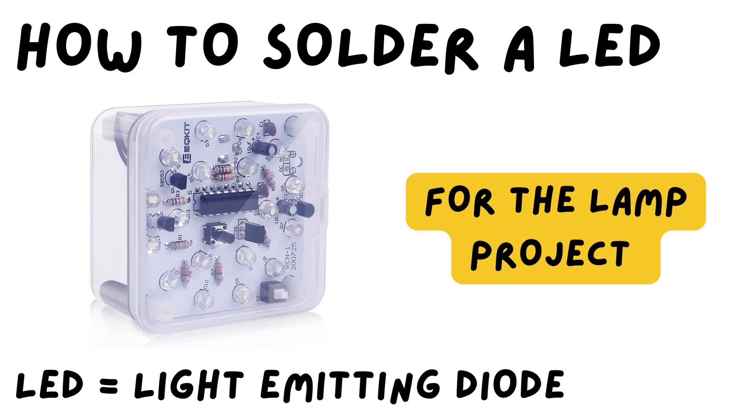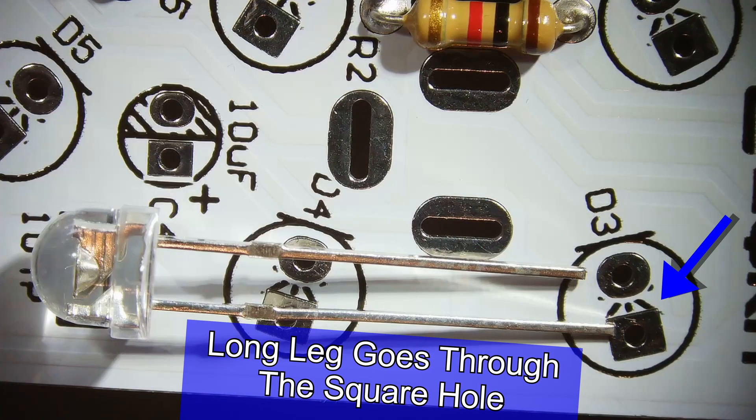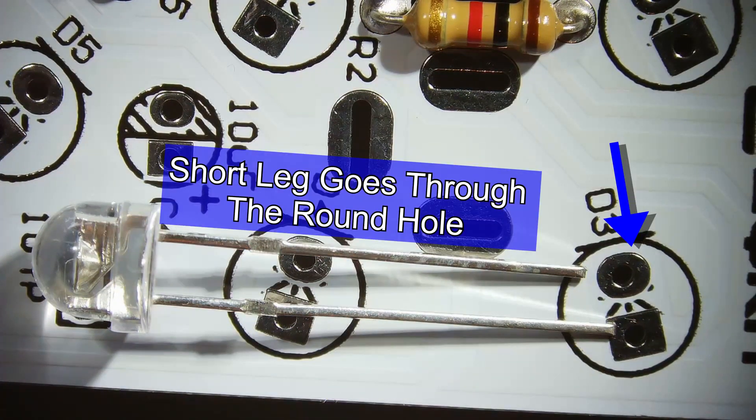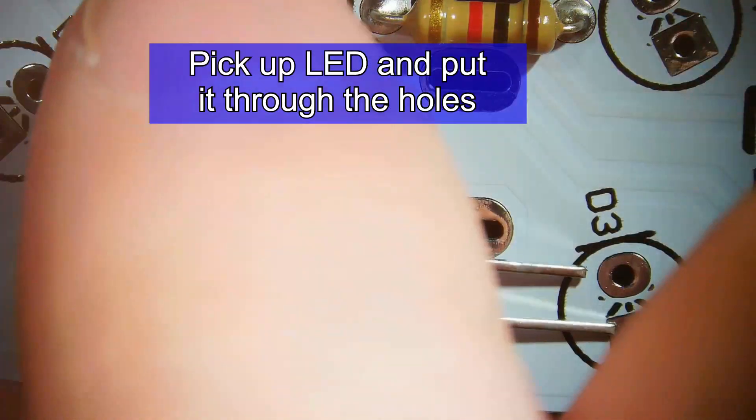This will be a how-to on soldering an LED for the lamp project. First things first, make sure the long leg goes through the square hole and the short leg goes through the round hole.